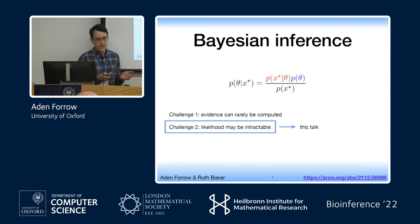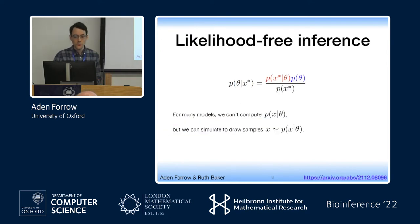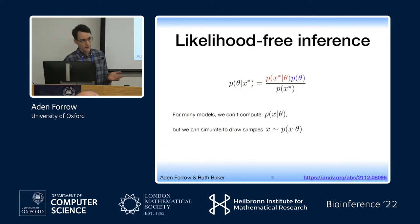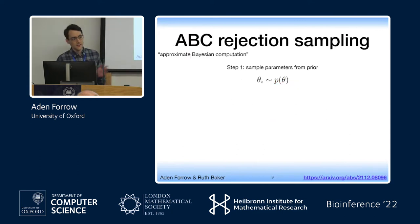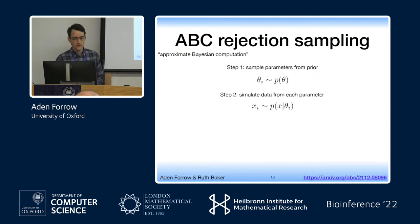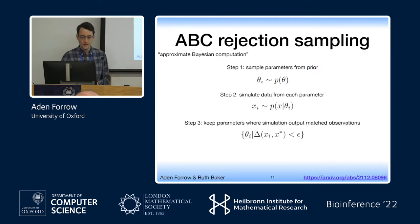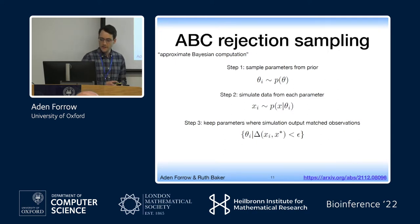What we can do is simulate from the likelihood. We can draw samples drawn from this likelihood for any particular parameter values. A classical way of doing inference in this setting is approximate Bayesian computation, where the process is: you sample a parameter value from your prior, you run a simulation from that, get some simulated data, and then compare that simulated data to your true data x* according to some distance function.